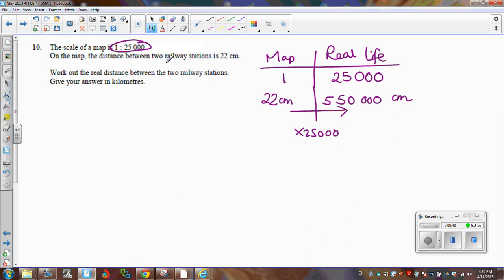So in real life, the distance between the two railway stations is this many centimeters. But we have to change that into kilometers.